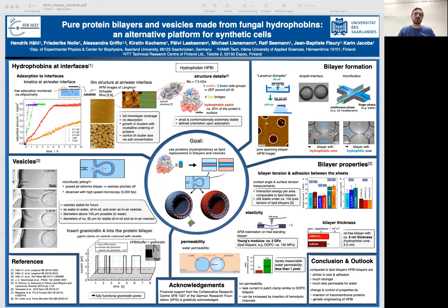From adsorption studies we know that this protein likes to cover water interfaces and readily builds very dense monolayers. If we bring two of these layers together — for example in a Langmuir-Schäfer-like way, or in a droplet interface bilayer in a petri dish or in microfluidics — we can create bilayers.